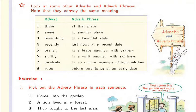Seventh, 'unwisely' — adverb phrase: 'in an unwise manner' or 'without wisdom.' Eighth, 'soon' — adverb phrase: 'before very long' or 'at an early date.'